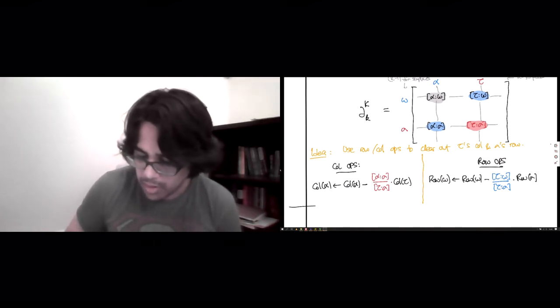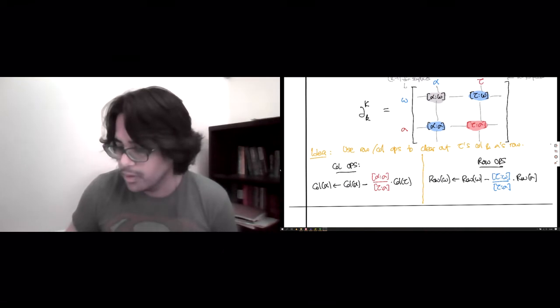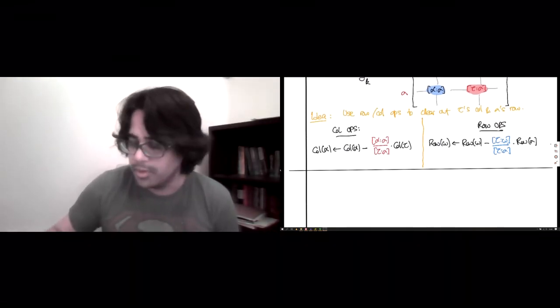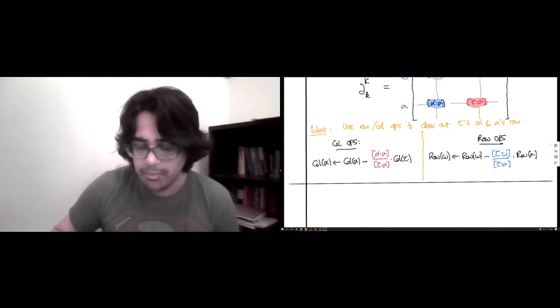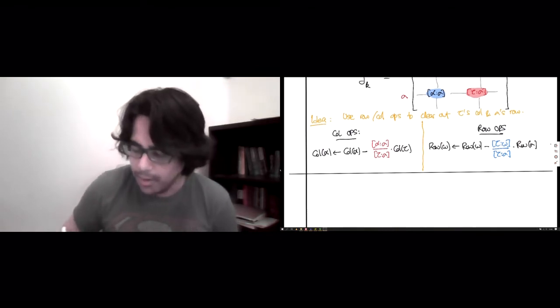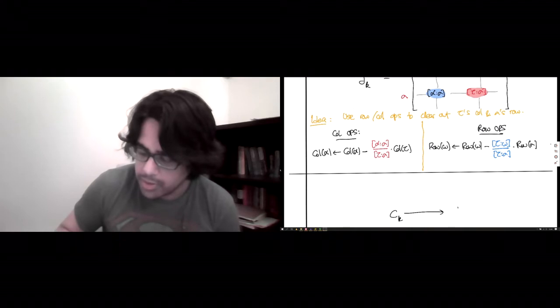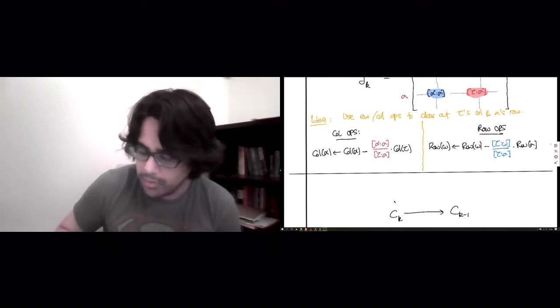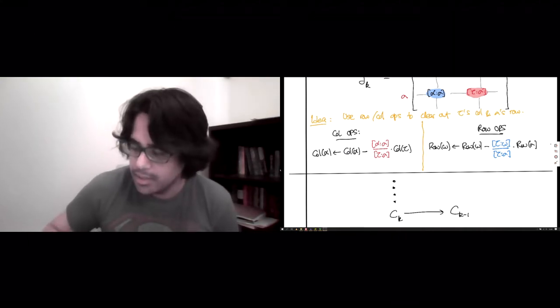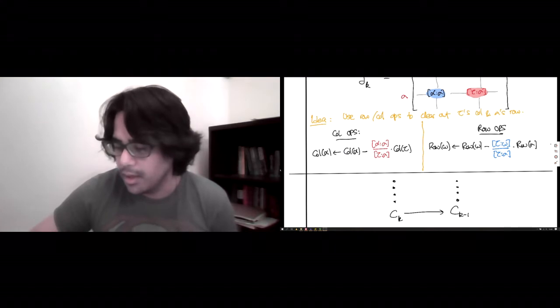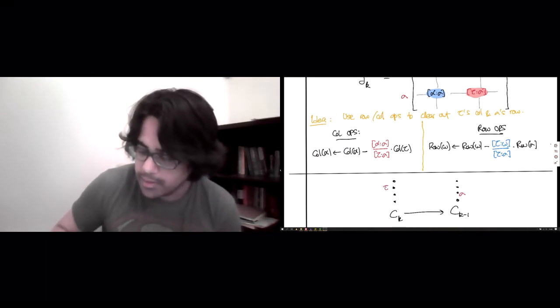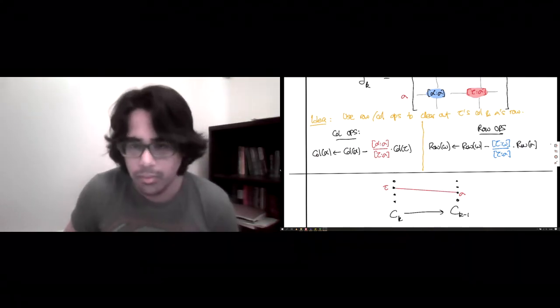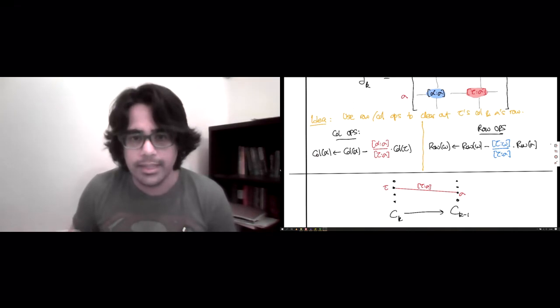So, these are the row and column operations that you need to get the clearing out. And if you think about what's happening as a result of performing these row operations, remember this boundary map that we have drawn, this kth boundary map, is when we were describing what homology does, or at least what diagonalization does. C_k is some vector space with those dots representing simplices as basis elements. C_{k-1} is some vector space with dots representing some simplices as well of k minus 1 dimension. And here is tau, and here is sigma, and what we're doing is saying that that edge with weight tau sigma is the only thing that's allowed to touch tau or sigma.